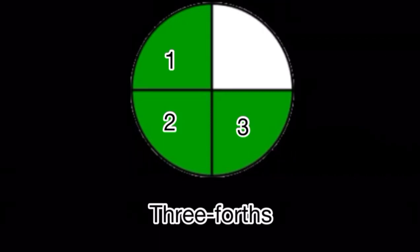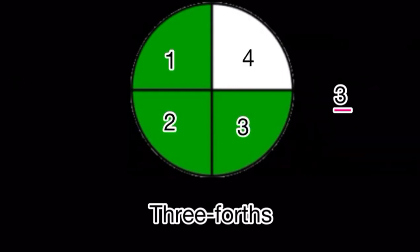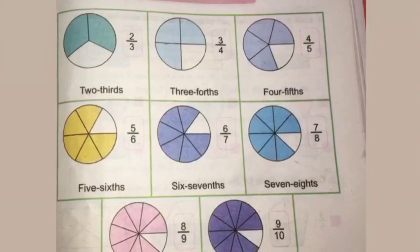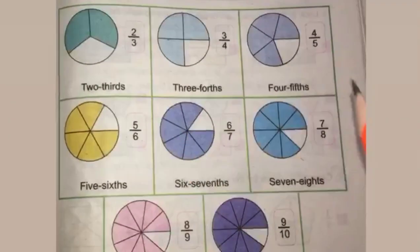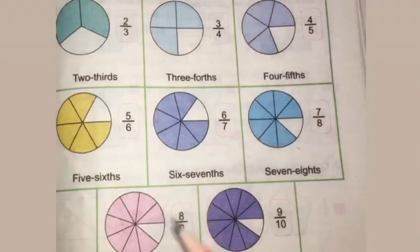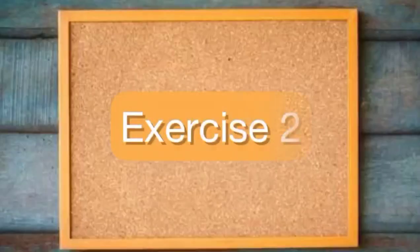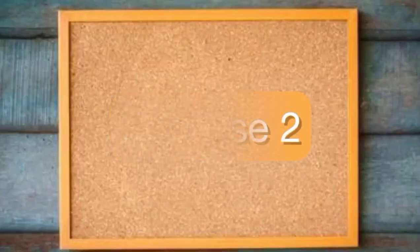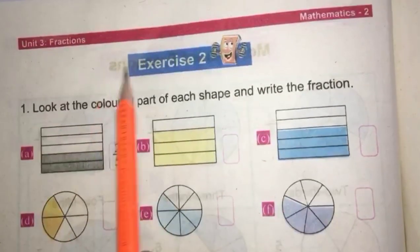Now I will write the total number of equal parts, that is four, so I will write four under the fraction bar. There are more examples for you. Let's do exercise number two.